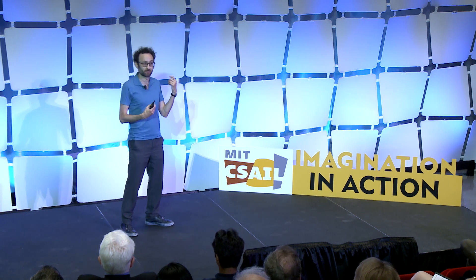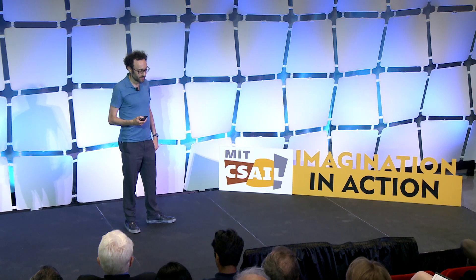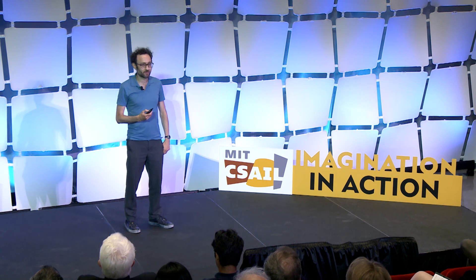The state of the art, when I learned about this area, was: when you pick a new element out of that three-way cross product — one choice from each of those categories — you had to go get one of a small set of experts to rewrite all the code from scratch in C or assembly to get the best performance simultaneously with security.